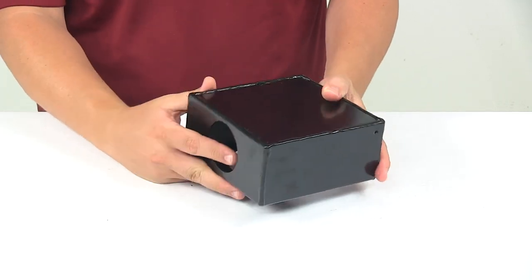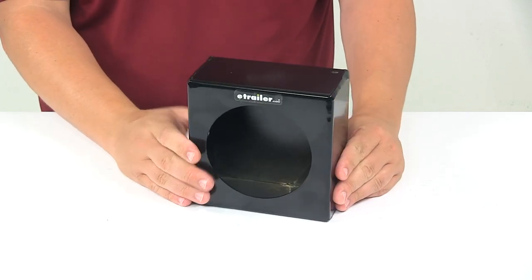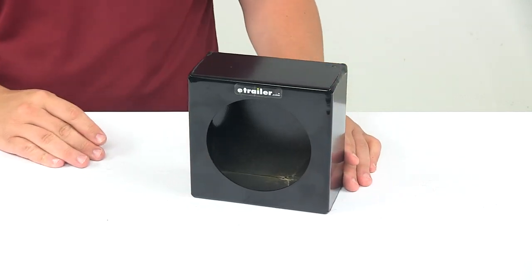The box is designed to help protect your lights from the elements. It's made from a durable steel construction with a black powder coated finish to resist rust and corrosion.